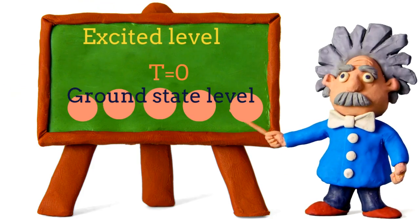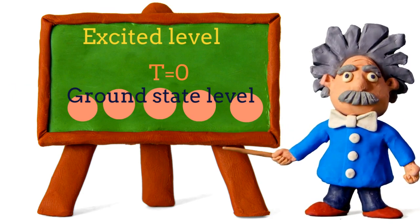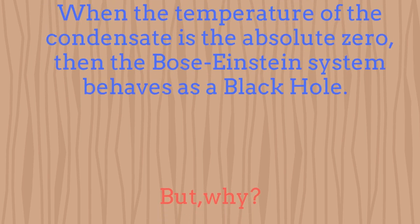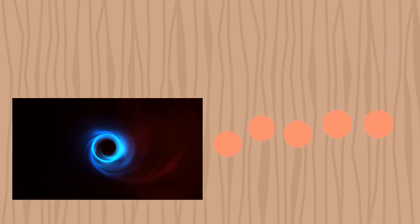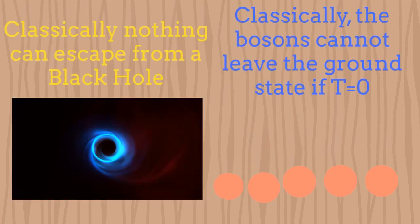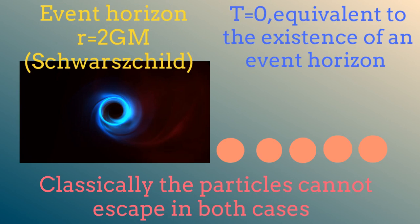Now imagine that we can reach the absolute zero temperature for the condensate. In such a case, the Bose-Einstein condensate system would behave exactly as a black hole. Classically, nothing can escape from the event horizon of the black hole. In the same way, classically, the bosons belonging to the condensate cannot escape from the ground state if the temperature of the system is absolute zero. In some sense, the existence of the event horizon for a black hole is equivalent to the zero temperature condition for the condensate.